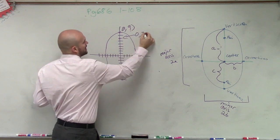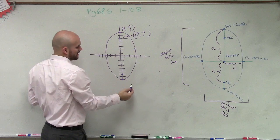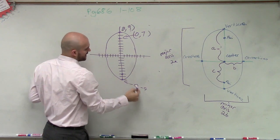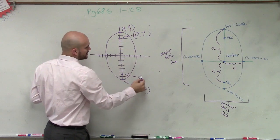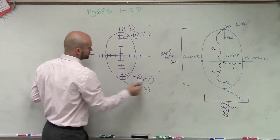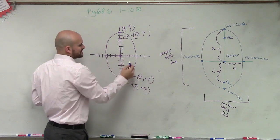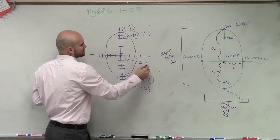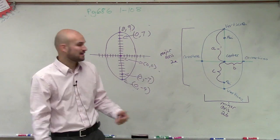This is 0, 7. Over here, it's 0, negative 9. And this one right here is 0, negative 7. And we also know that the center is at 0, 0. All right, so that's what we're given right now.